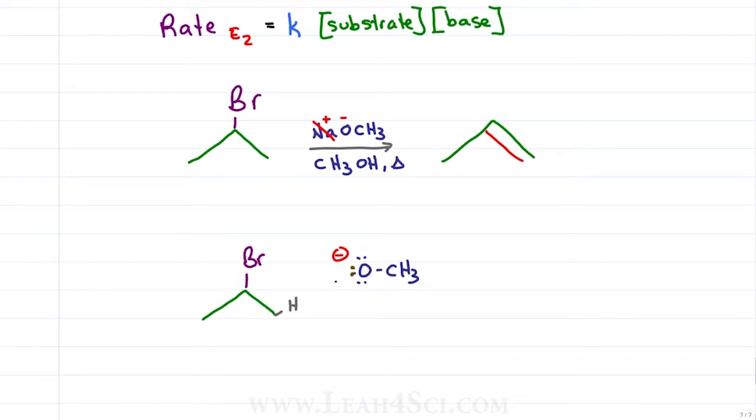Oxygen will use this lone electron pair to attack the beta hydrogen. This will cause the electrons to collapse in the direction of the leaving group which will kick out the leaving group breaking bromine away from the molecule. I explain the why and how behind this mechanism in much more detail in the E2 video link below.